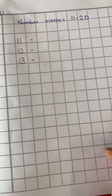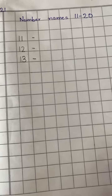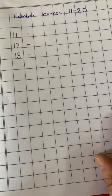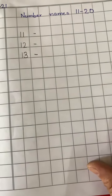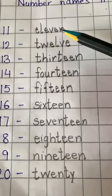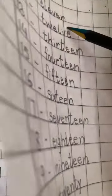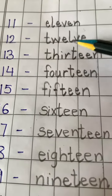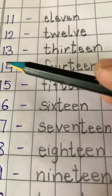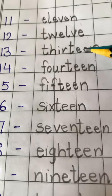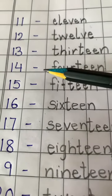Say the poem that we have already learned of number names and write number names 11 to 20. Like 11 — E, L, E, V, E, N — eleven. 12 — T, W, E, L, V, E — twelve. 13 — T, H, I, R, T, E, E, N — thirteen.